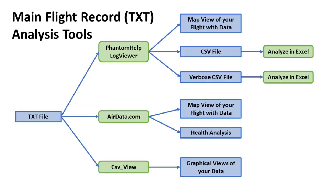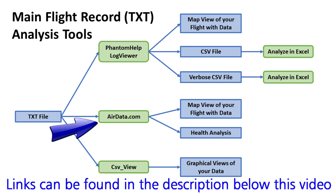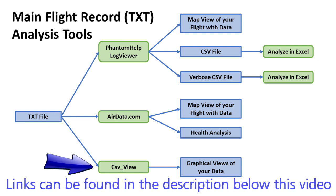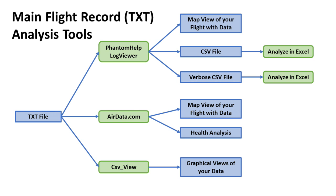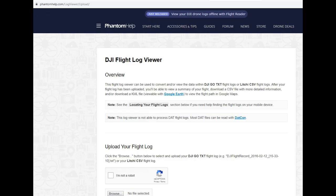Now the fun begins. For analyzing your main flight record, I found three basic options in increasing order of complexity: Phantom Help Log Viewer, AirData.com — sometimes known as AirData UAV — and a tricky tool called CSV View. I would start with Phantom Help Log Viewer, and despite the name, you can read the flight records for most types of drone types with this nice tool. There's an easy-to-use map view, and you can export two types of CSV files for further viewing and analysis in spreadsheet tools like Microsoft Excel.